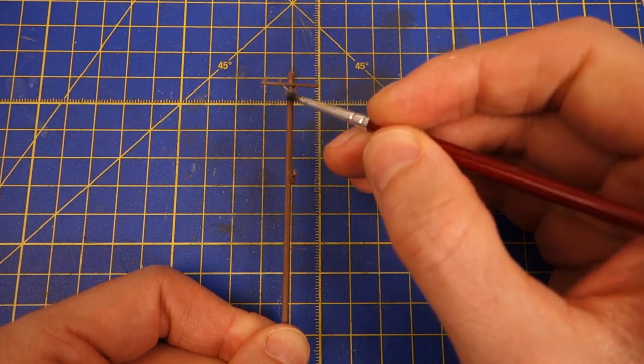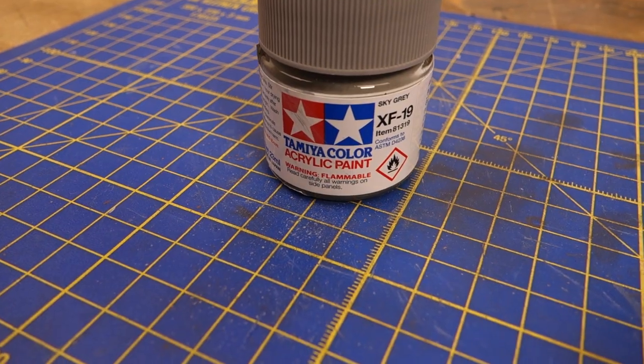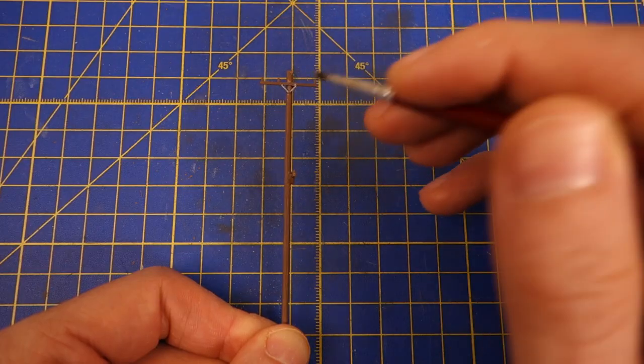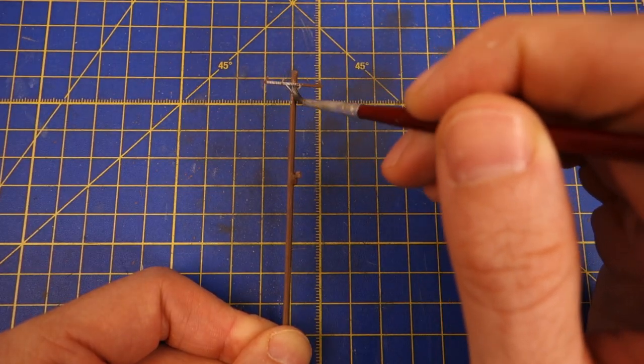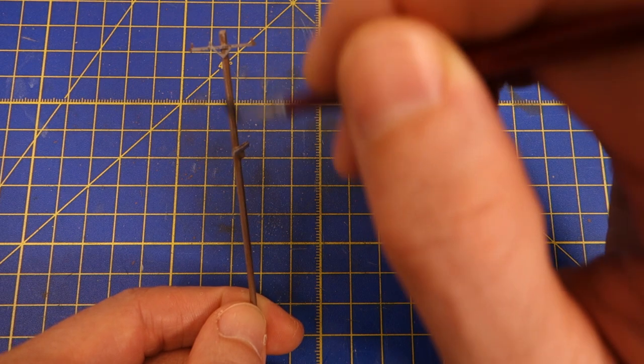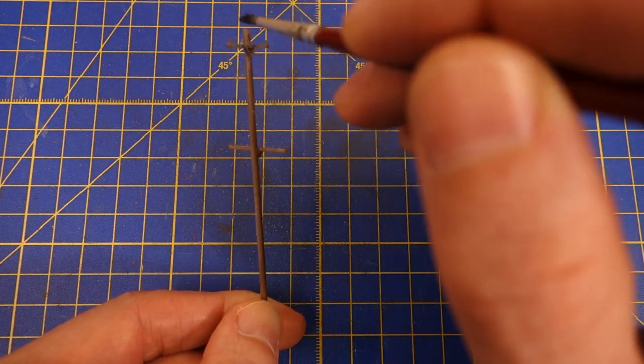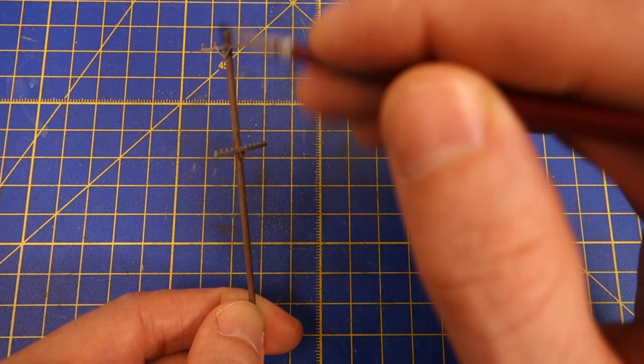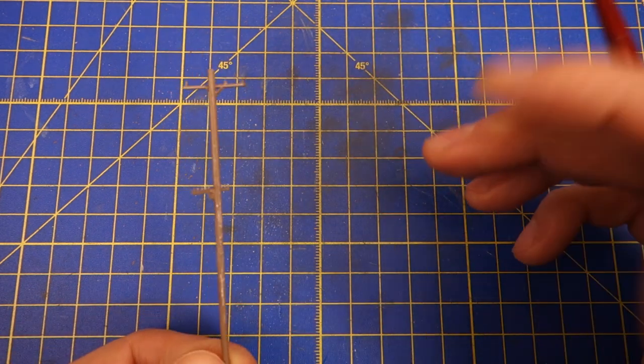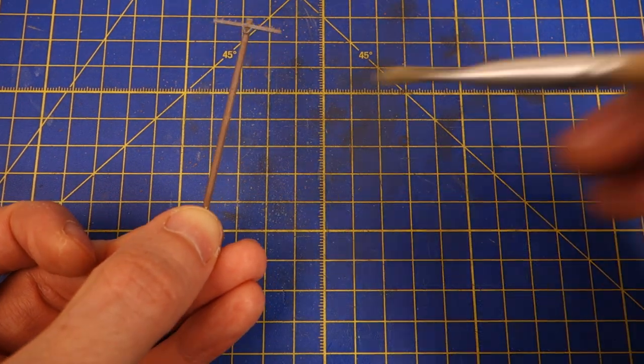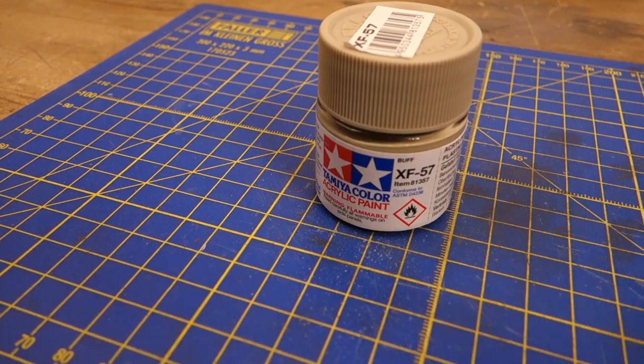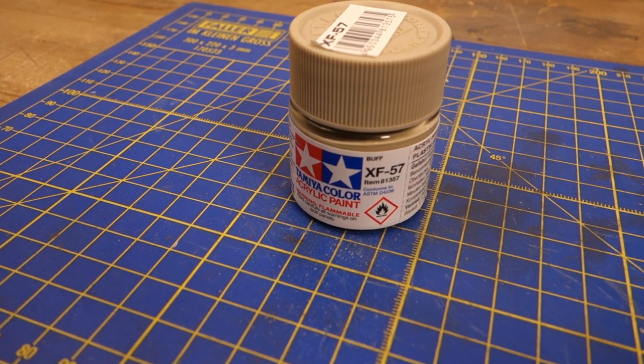Then I proceed to paint the pole in XF19 Sky Grey. I try to let more of the underlying brown show through in the lower portion of the pole to give it a more aged and faded look at the top. After this I dry brush a bit of XF57 Buff to add a bit more color variation to the pole.